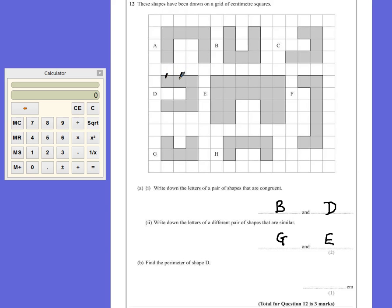So we have 1, 2, 3, 4, 5, 6, 7, 8, 9, 10, 11, 12, 13, 14, 15, 16. So the perimeter of shape D is 16cm.